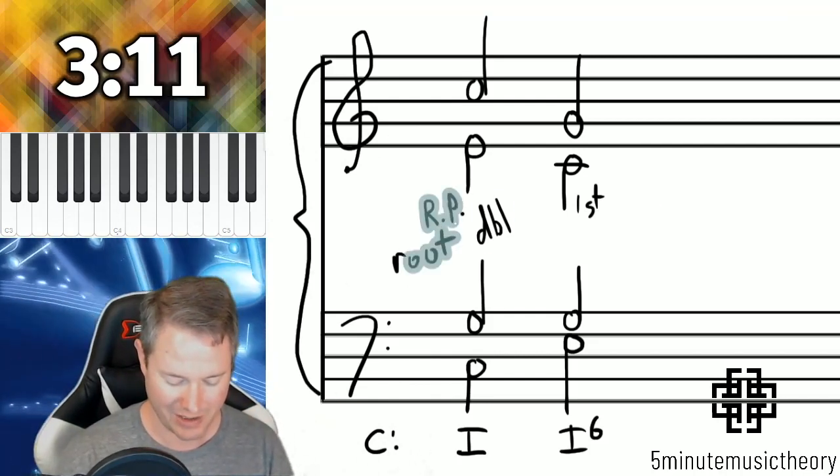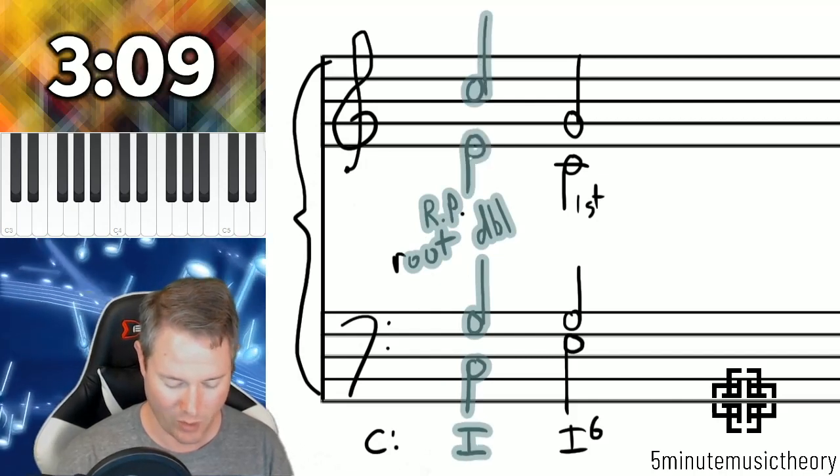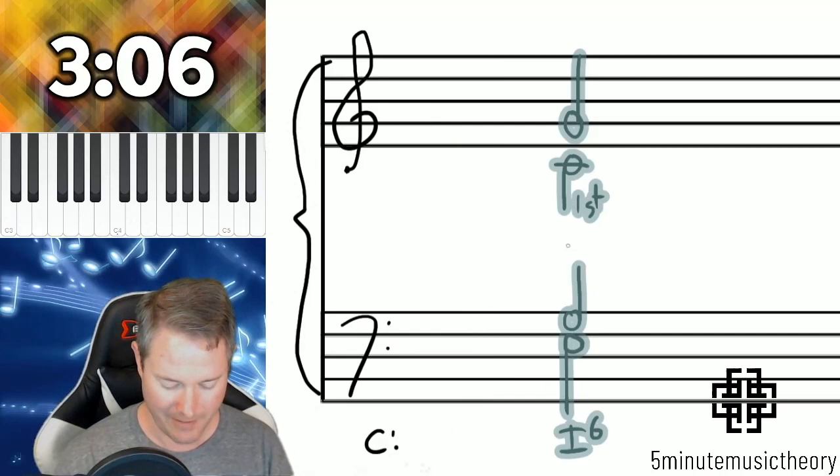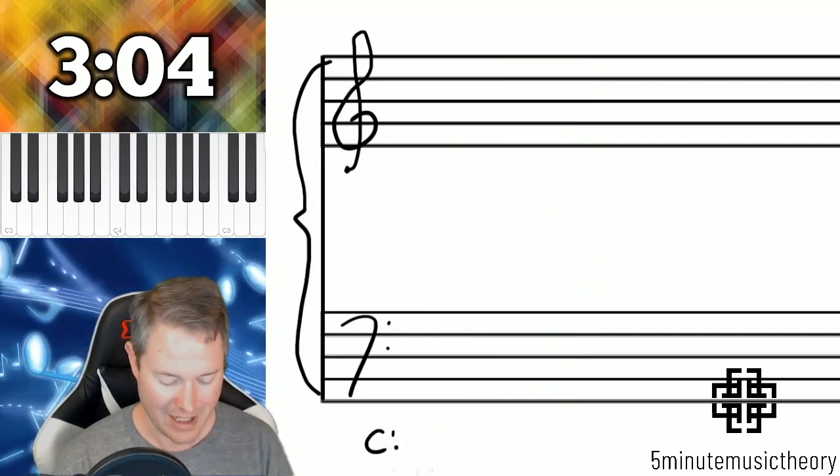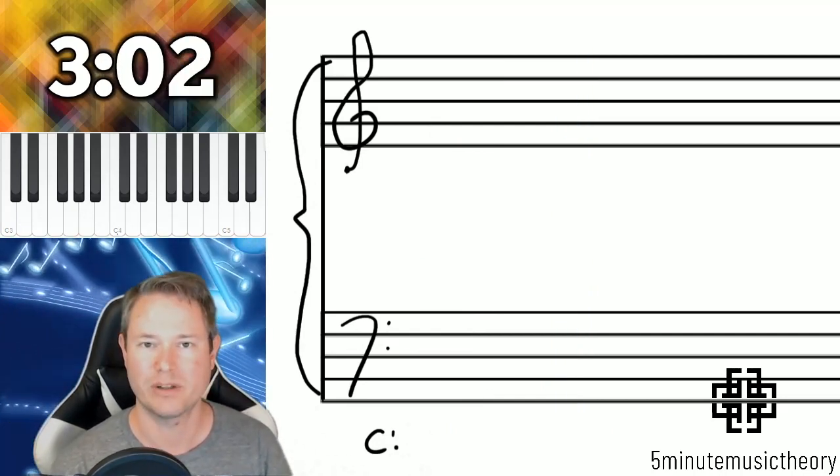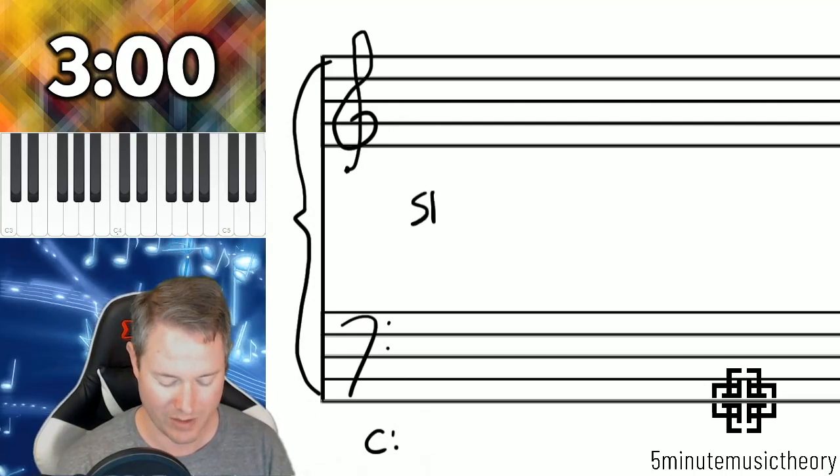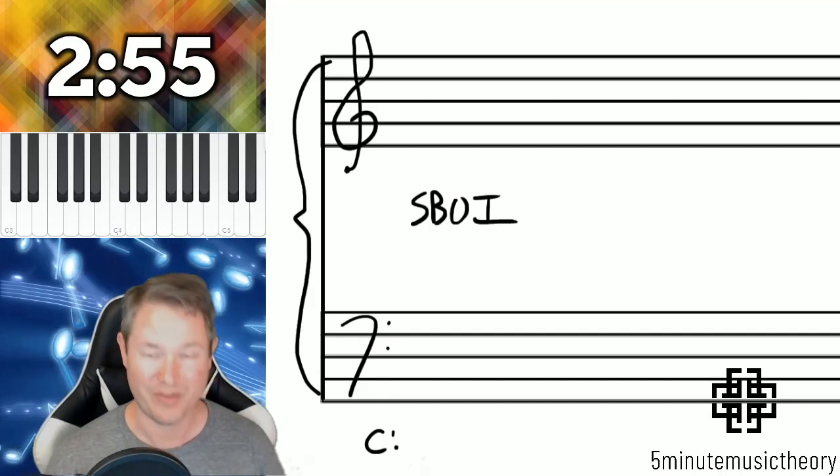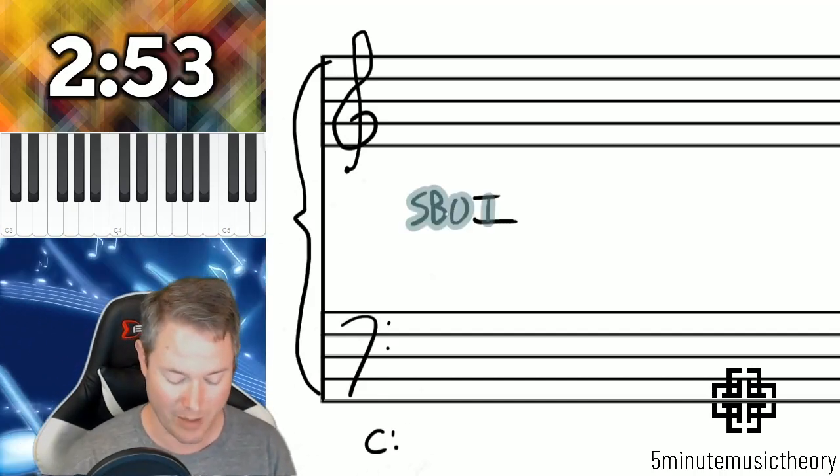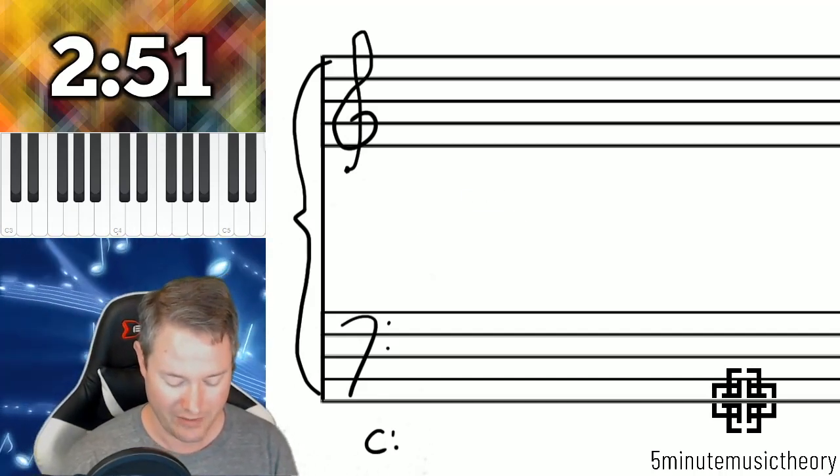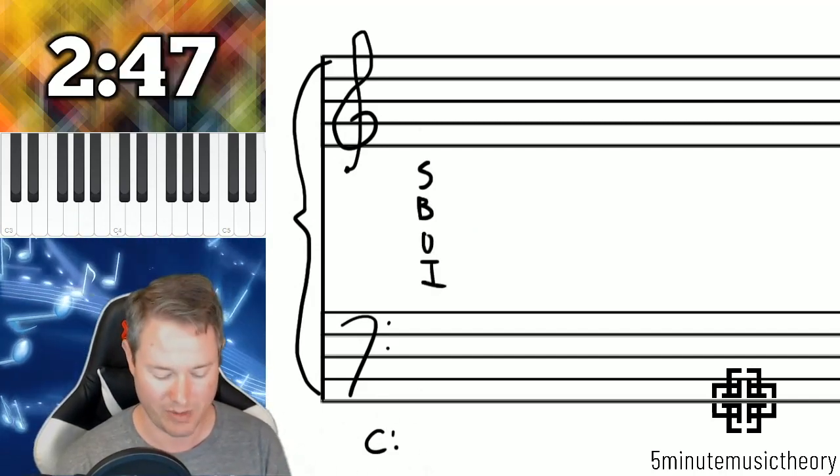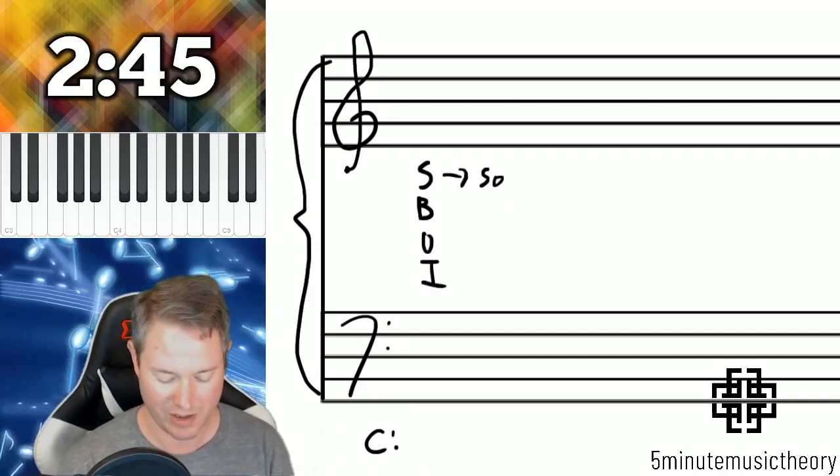And I'm going to clear some space so that I can write this because this is pretty important. If you ever talk to any of my students who have been through my class, I asked them what's the doubling rule for first inversion triads and they always tell me SBOI, which doesn't really mean anything of course by itself, but this is the doubling hierarchy for first inversion triads: SBOI. So your strongest doubling is to be doubling the soprano.